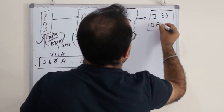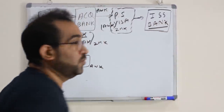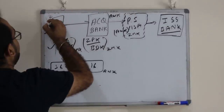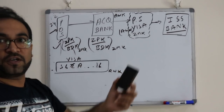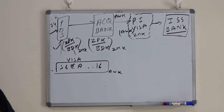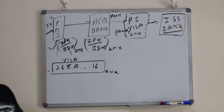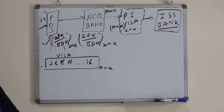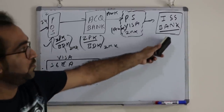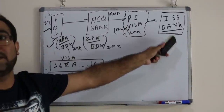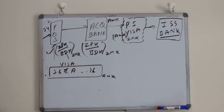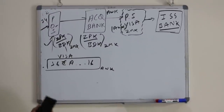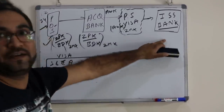Now the final entity comes into the picture — the issuer bank. The issuer bank is the one who provided you the PIN 1-2-3-4 which you entered at the POS terminal. When you applied for a card, you received a plastic card and a separate envelope containing the PIN number. You either use that same PIN or change it at an ATM. So this bank is the only one that can validate whether the PIN you entered is correct.